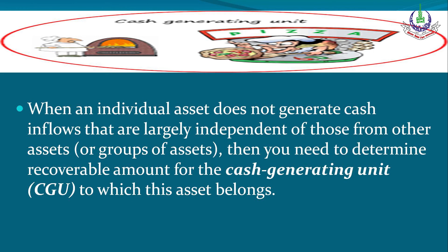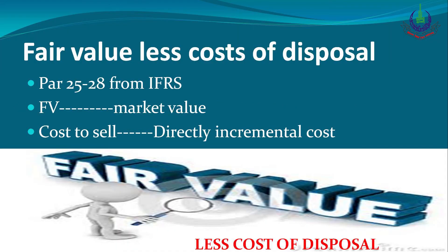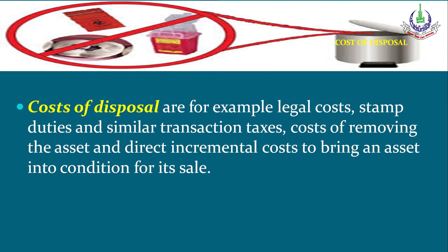Cash Generating Unit: when an individual asset does not generate cash inflows that are largely independent of those from other assets, you need to determine the recoverable amount for the cash generating unit to which this asset belongs. The CGU is the smallest identifiable group of assets. Fair value less cost to sell — refer to paragraphs 25-28 from IAS 36. Fair value normally means market value; cost to sell means directly incremental cost of disposal.